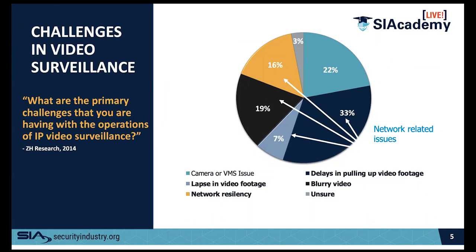19% of people recorded blurry or artifacted video. Of those 19%, at least 10% just need to clean their lens or dome — it has nothing to do with the network. For the rest, it's typically some type of resource restriction, whether in the IP camera, the network, the uplink, the switch, or the decoding point. All of those can manifest as blurry video or video with artifacts.